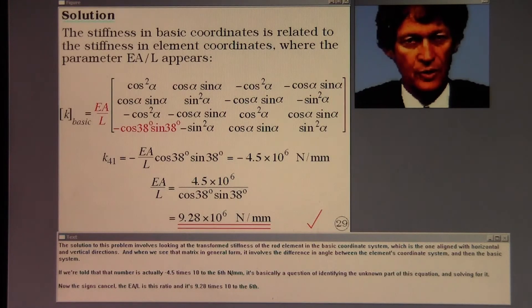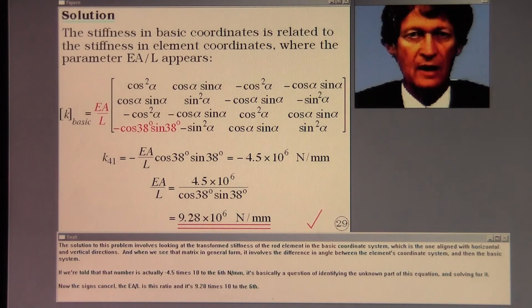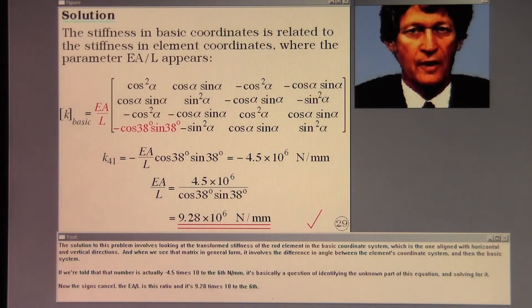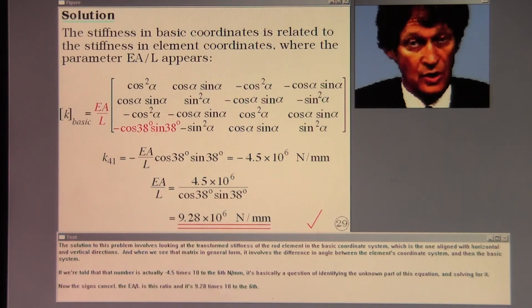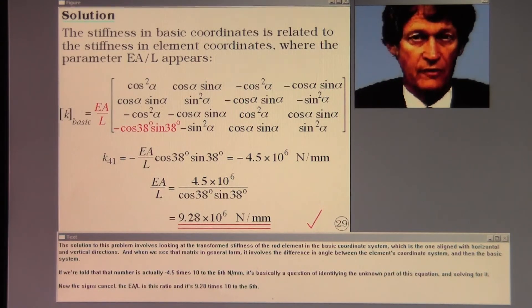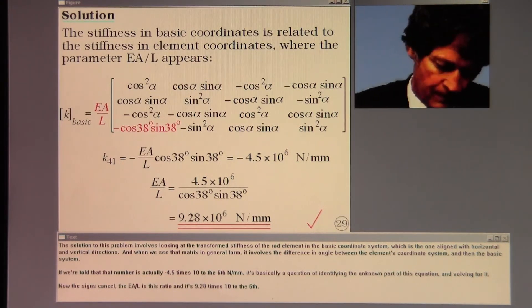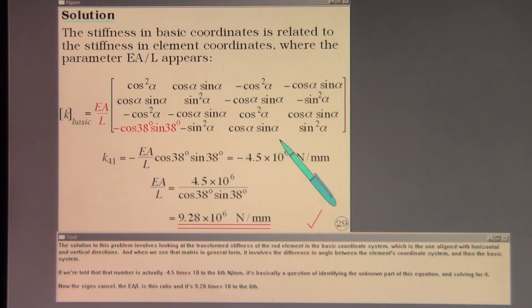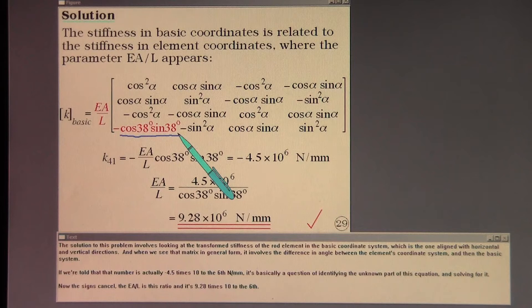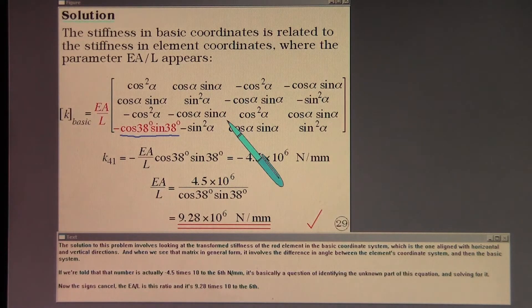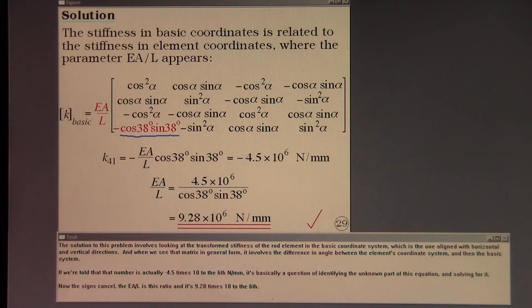The solution involves looking at the transformed stiffness of the rod element in the basic coordinate system, which is aligned with horizontal and vertical directions. When we see that matrix in general form, it involves the difference in angle between the element's coordinate system and the basic system.